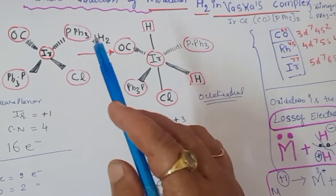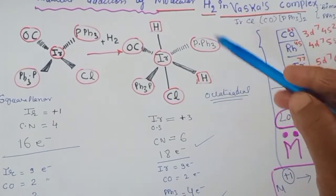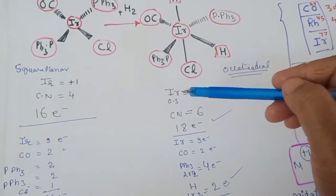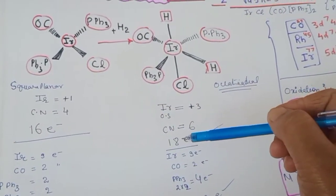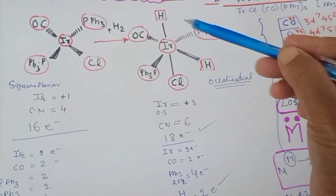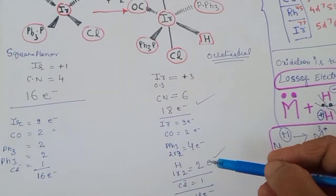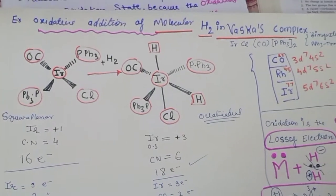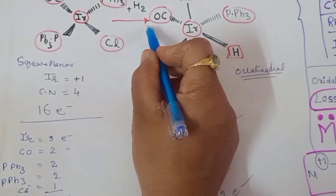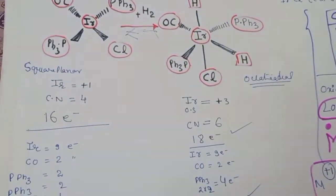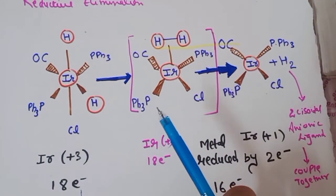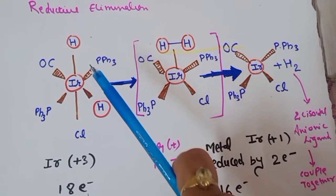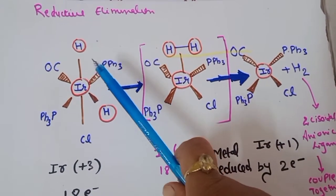When the neutral hydrogen ligand adds to the complex, it is converted to an octahedral geometry with 6 ligands in a cis arrangement. The oxidation state changes from +1 to +3, the coordination number becomes 6, and it becomes an 18-electron complex. The hydrogen behaves as an anionic ligand with a −1 charge each, contributing two electrons total.